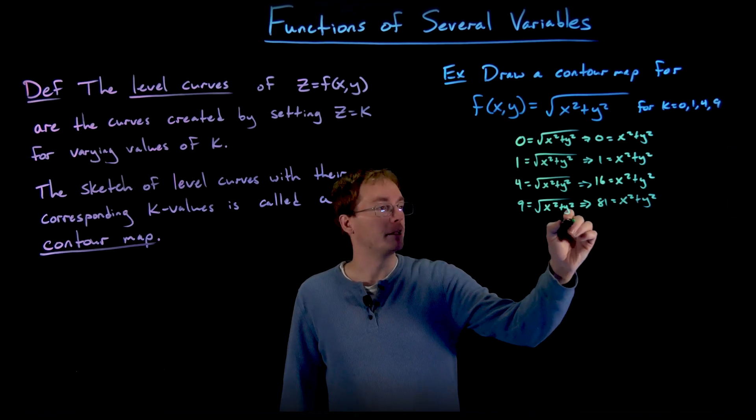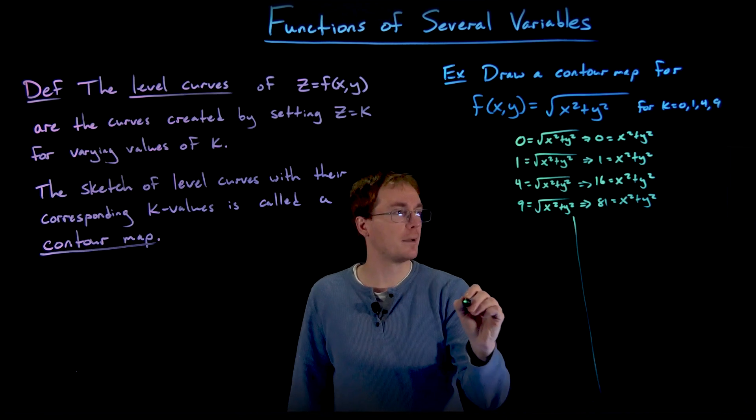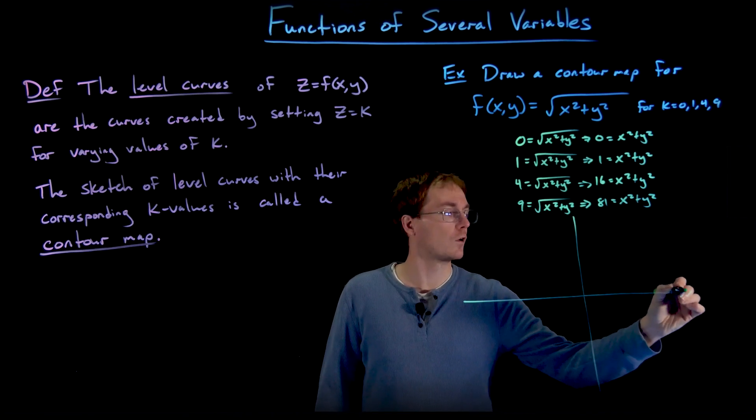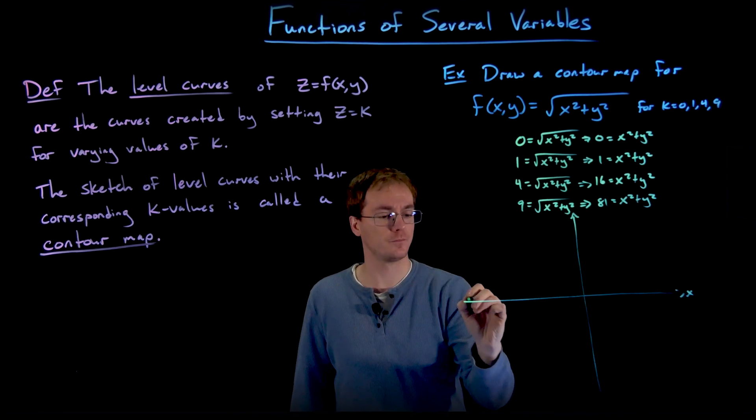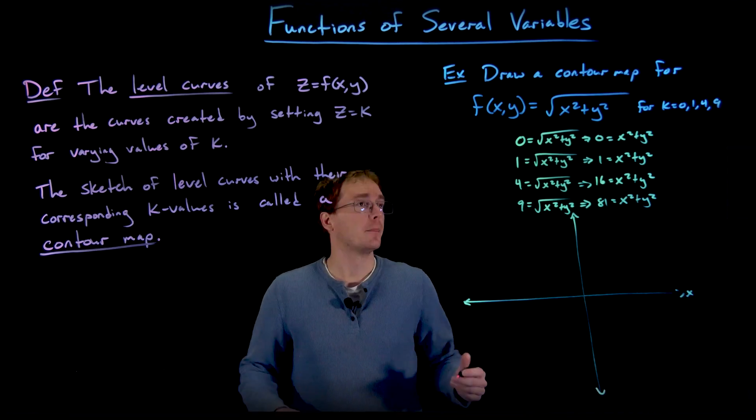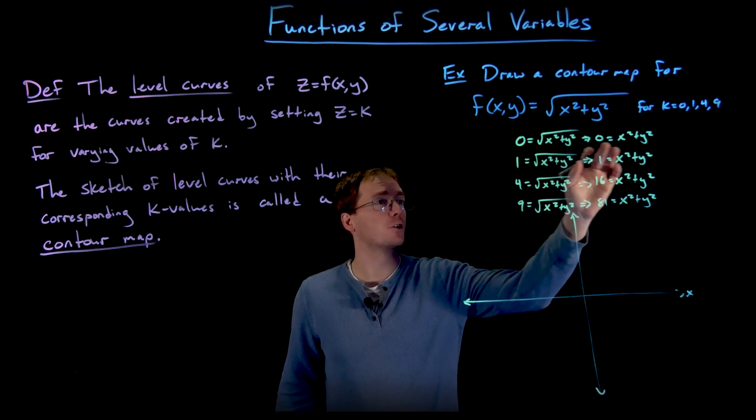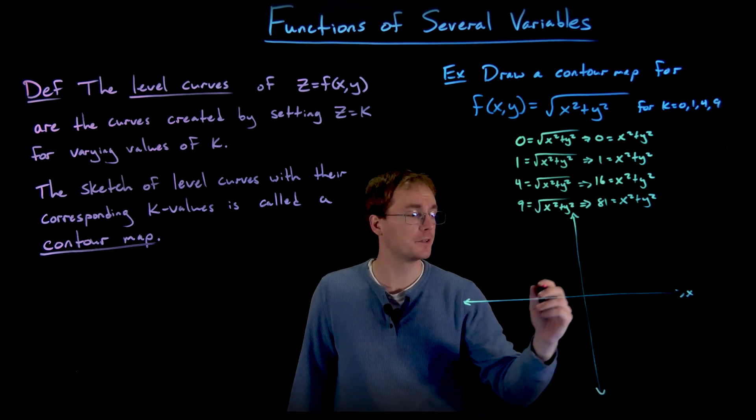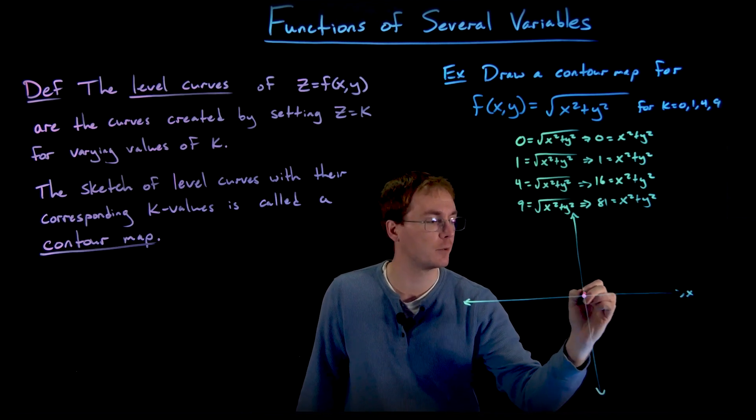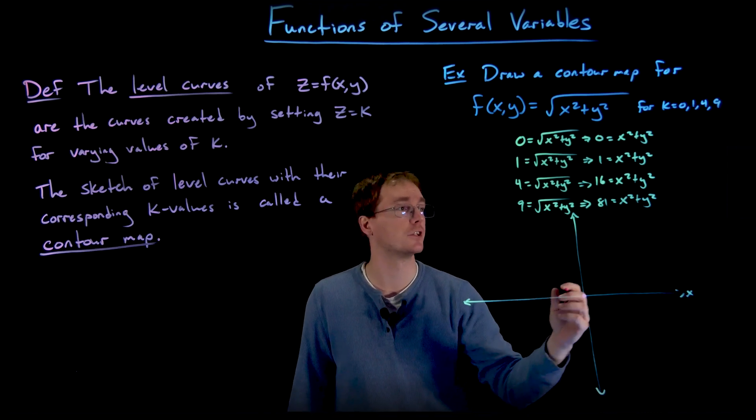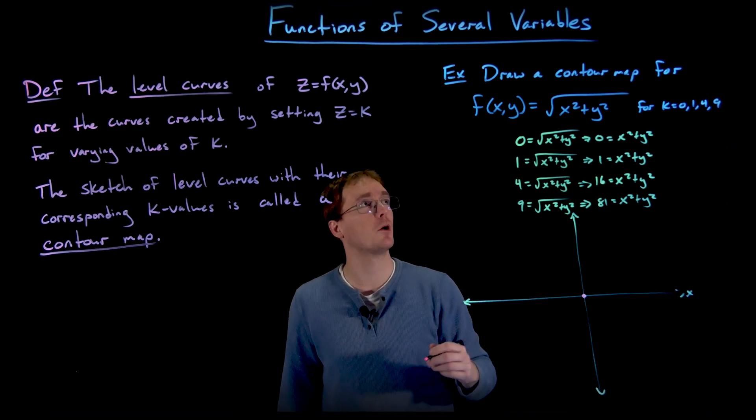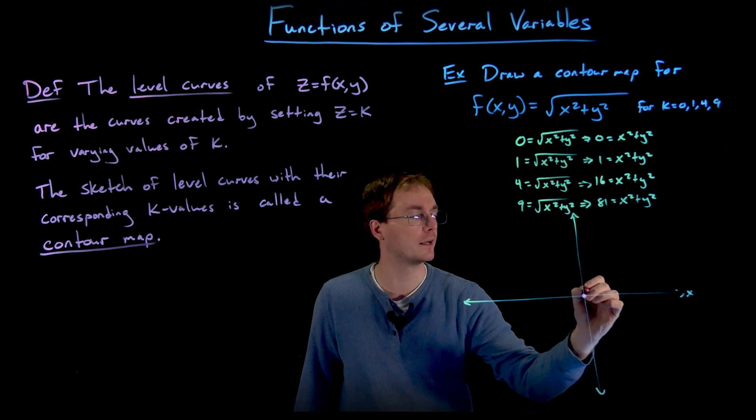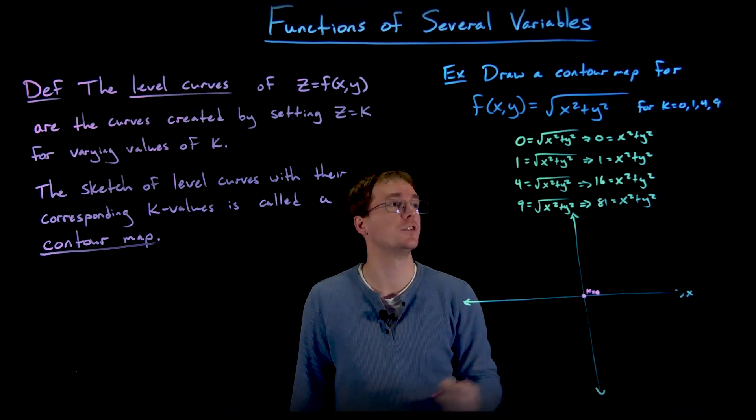And so now we have enough information to draw the contour map for our surface. All right, so we mentioned how this first level curve when we set k = 0 gave us 0 = x² + y². But the only point that satisfies that equation is the origin (0, 0). So the single point corresponds to our level curve when k is equal to 0.